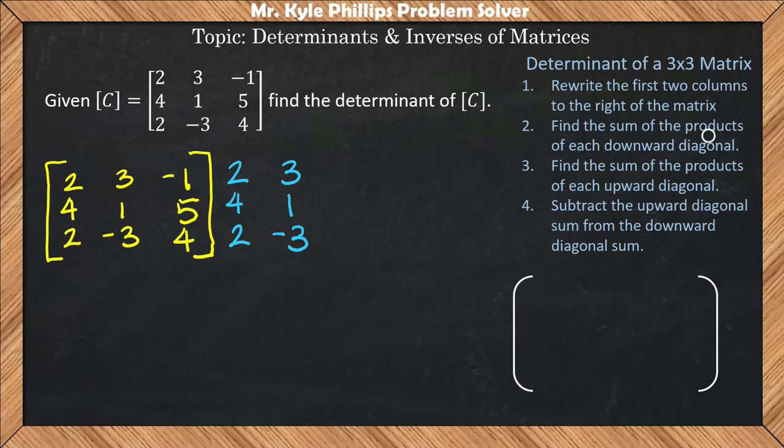Now it says find the sum of the products of each downward diagonal. So what we'll do is we'll start up here in the top left, and we'll say 2 times 1 times 4. Well, that's going to give us 8.